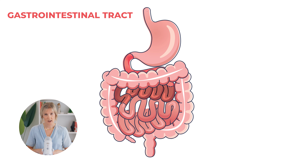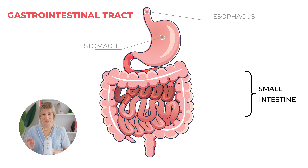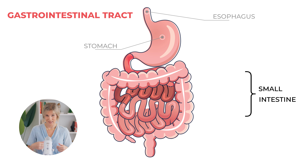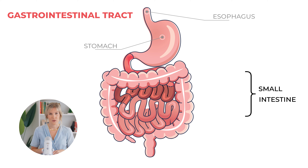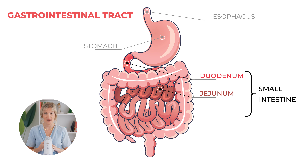The GI tract starts with the mouth and the esophagus, which leads into the stomach, and then the small intestine. The small intestine isn't actually small at all — it's around six to seven meters long, which is pretty hard to imagine all tucked up in there. It's so long that we break it down into three parts: at the top we have the duodenum, in the middle it's called the jejunum, and at the end it's called the ileum.